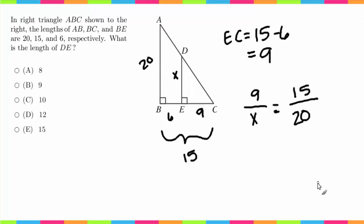So now I have this ratio, and all I need to do is cross-multiply to solve for X. So here I get 15X is equal to 180, X is equal to 12. Yes, 12. So that tells us that the length of DE is answer choice D, 12.